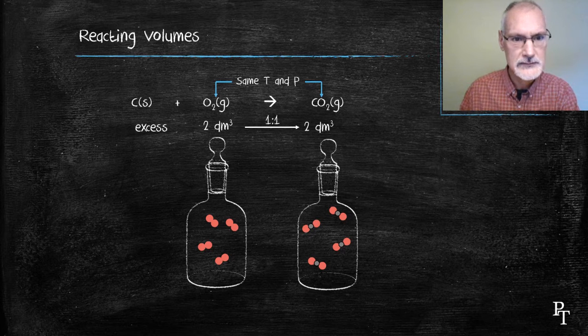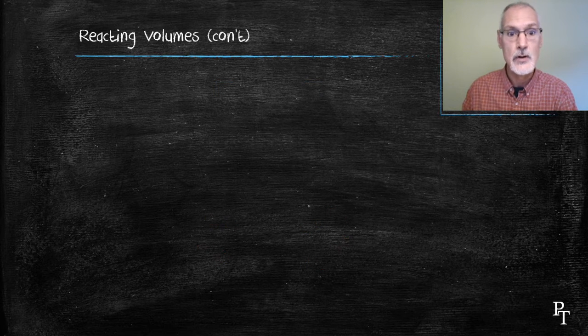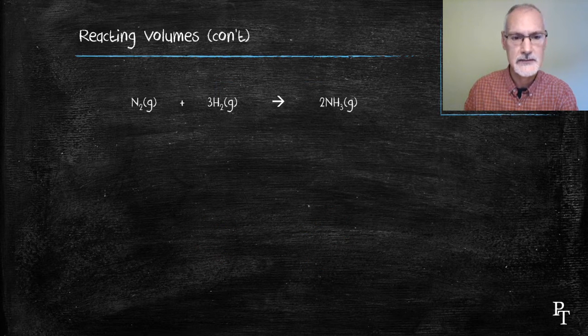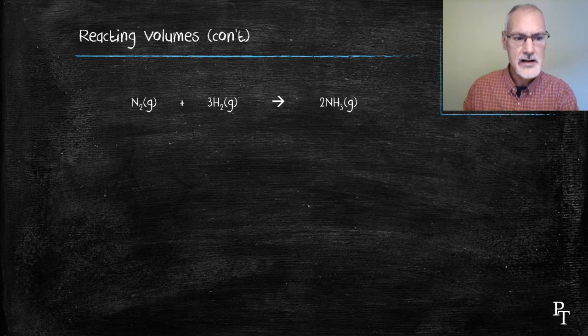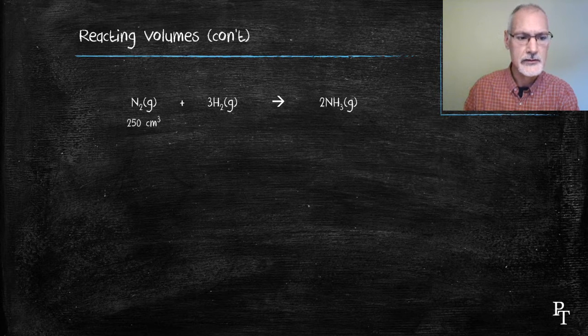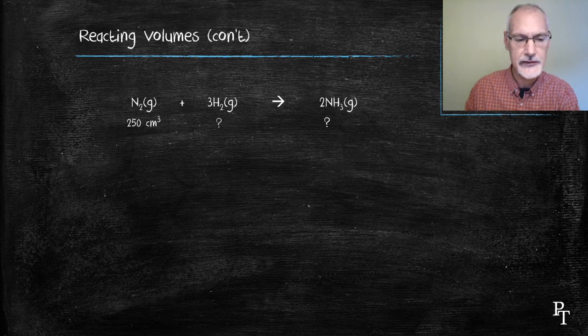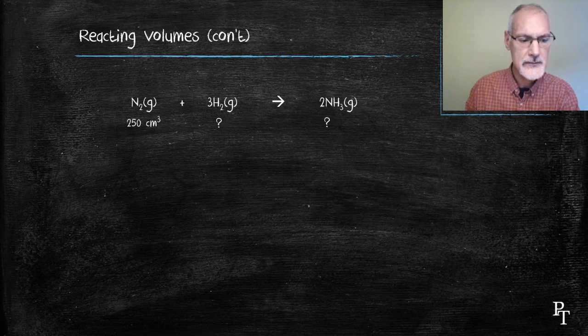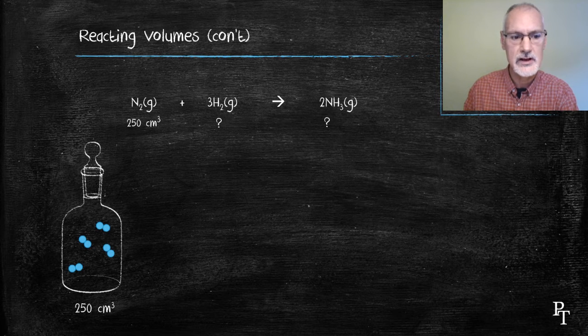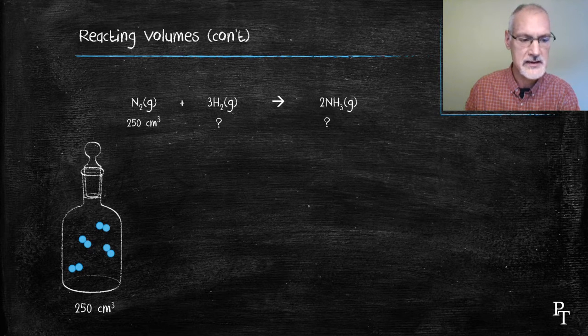Let's try another example synthesis or making of ammonia from nitrogen and hydrogen. I'm going to start off with 250 cubic centimeters of nitrogen and I'd like to figure out how much I have of each of the other gases. So there's my container that contains the nitrogen in it and I'm going to represent that with four particular molecules in it.